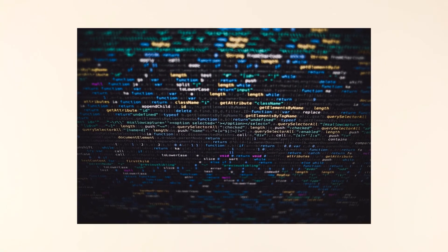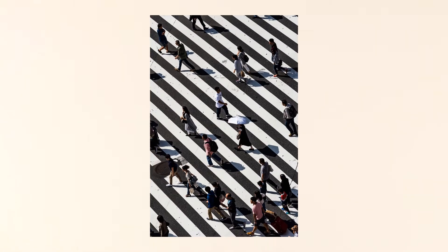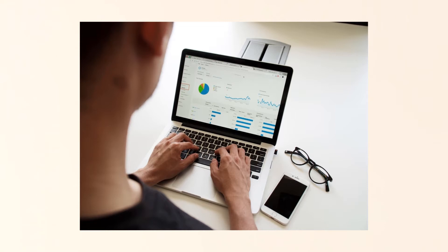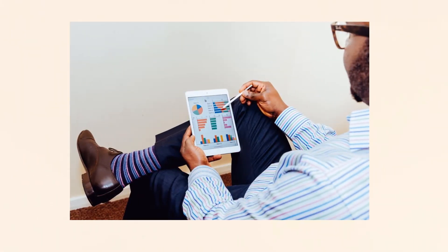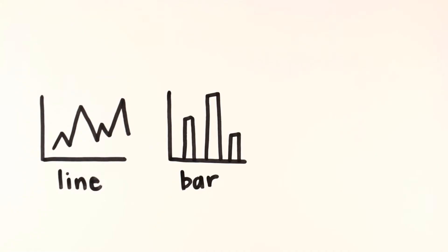Statistics are numerical data or information that show patterns in the decisions people make. Graphs are visual representations of this information. There are several different kinds of graphs.